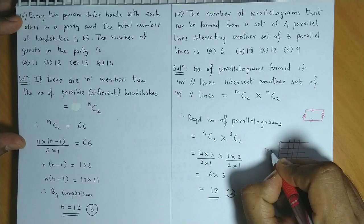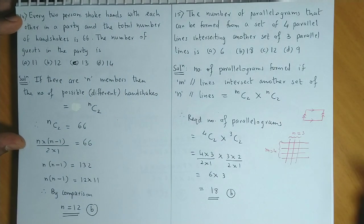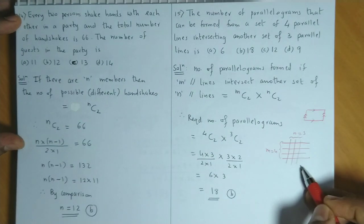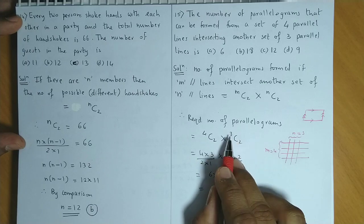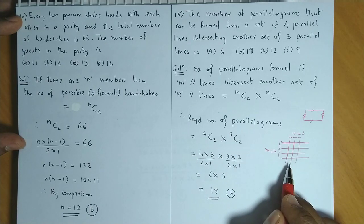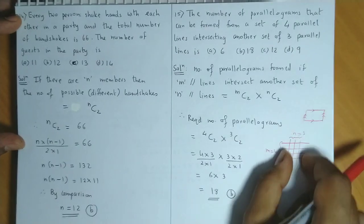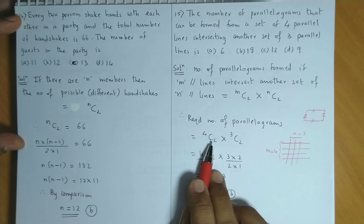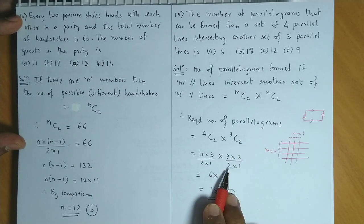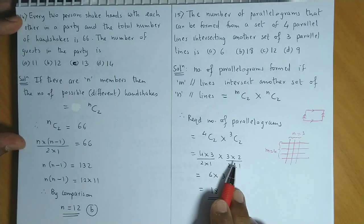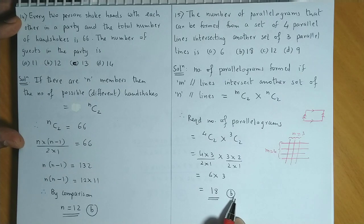Here m is equal to 4 and n is equal to 3. So you have four lines intersected by three lines. The number of parallelograms is 4C2 into 3C2. Simplifying: 4C2 is 4×3 / (2×1) = 6, and 3C2 is 3×2 / (2×1) = 3. So 6 × 3 = 18, which is option B.